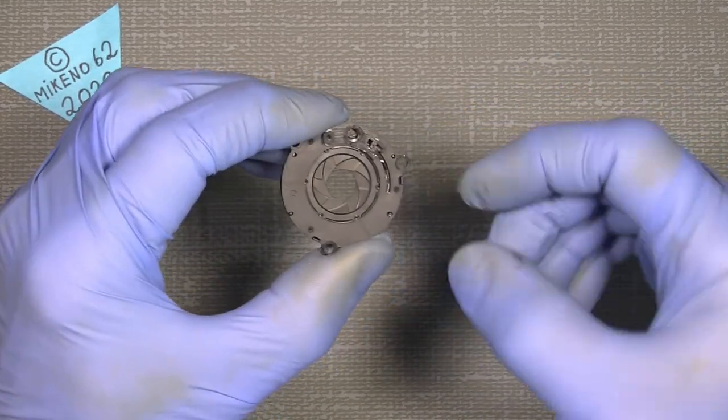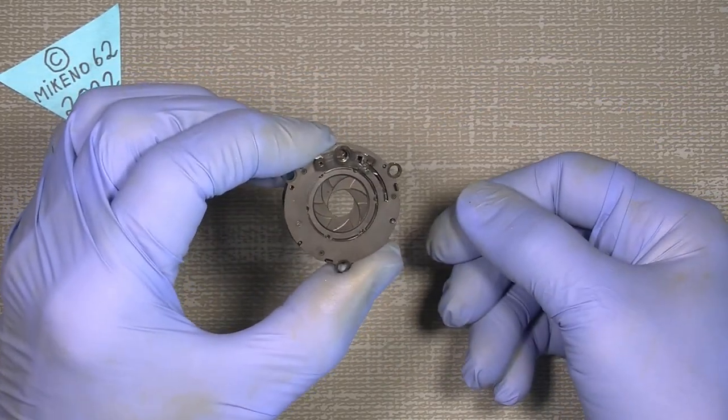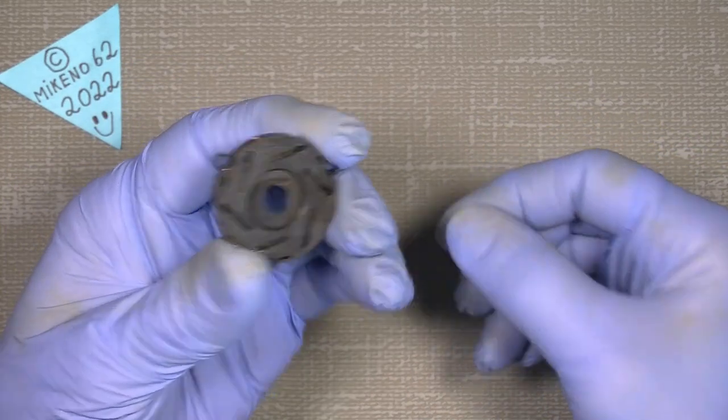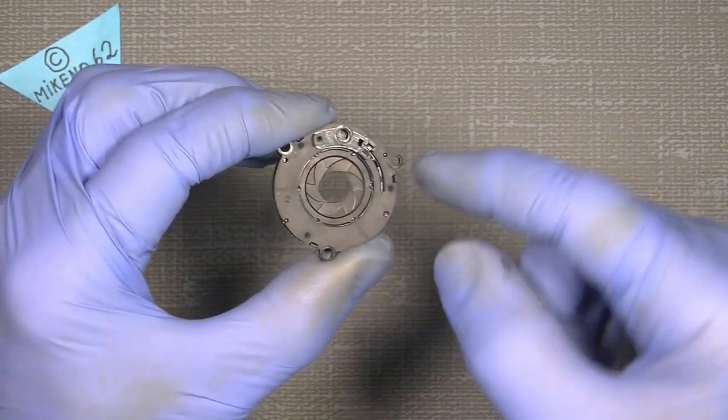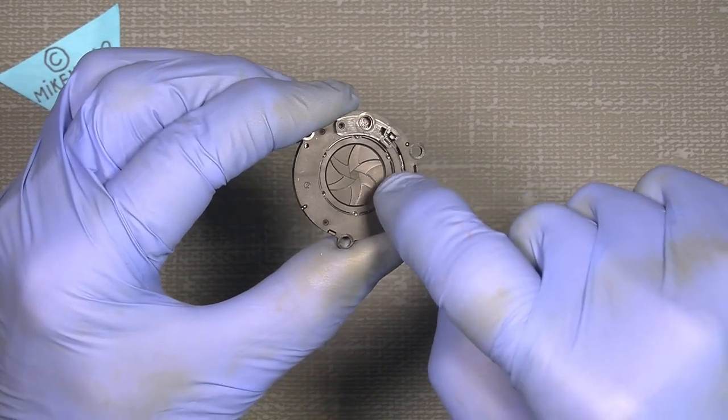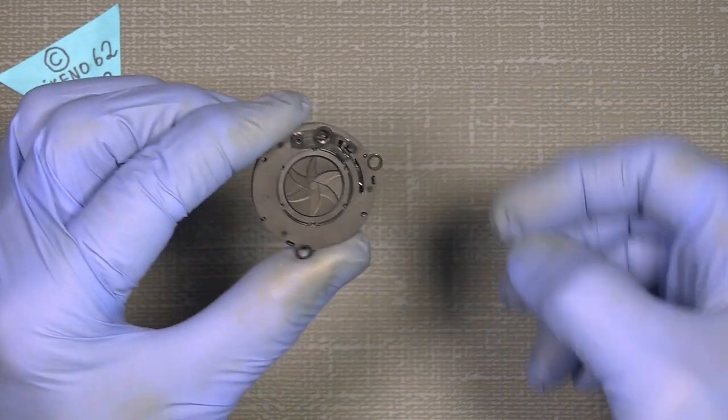One of you out there asked me what about using acetone? Well, I was thinking, yeah, taking an old lens with some plastic aperture plates and see what actually will happen.